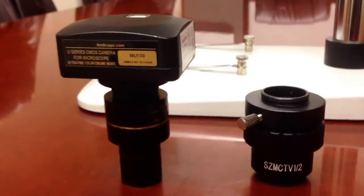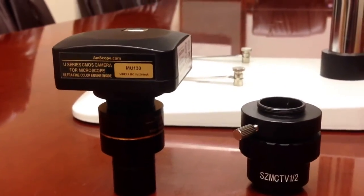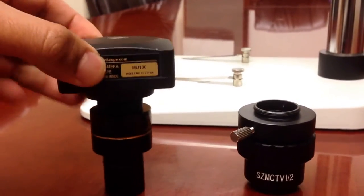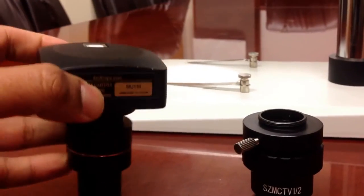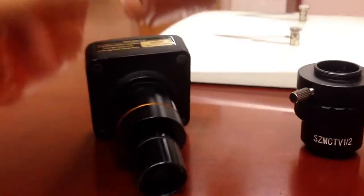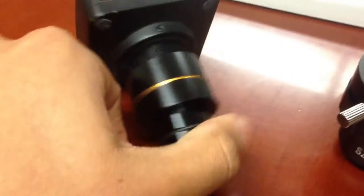So your MU, MA, or MT series camera will come with two parts. The first part, the top part, this is the camera part that has the sensor. And the long tube that's attached to it, this is called the reduction lens.